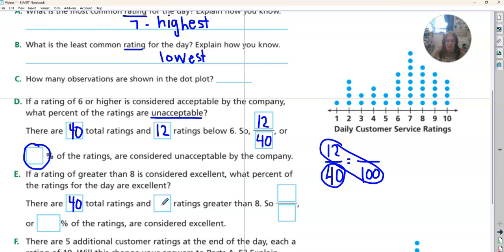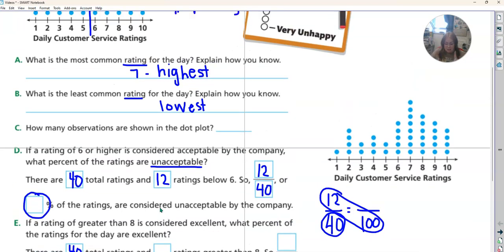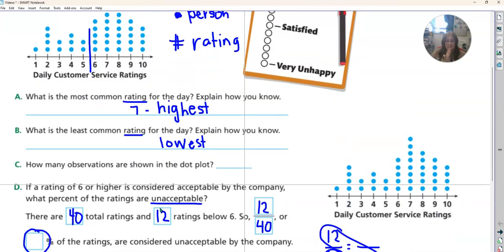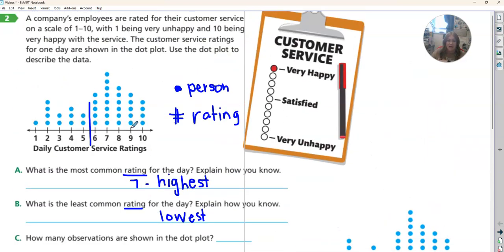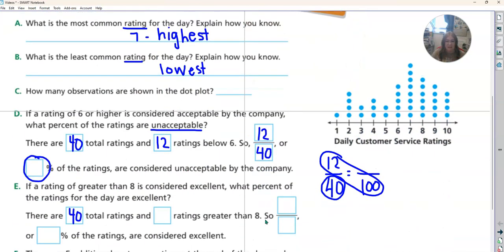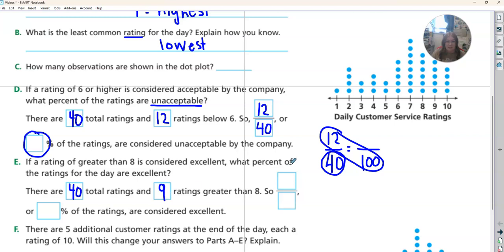Now we want to count the ones that are greater than eight. So it doesn't say eight, it seriously has to be greater than eight. It's not eight or higher, greater than eight. So these ones here are excellent. How many are there? There are nine excellent ratings.